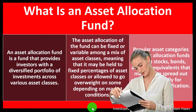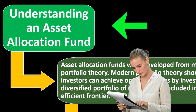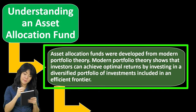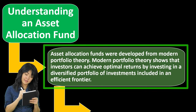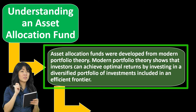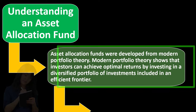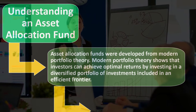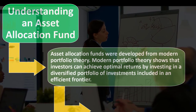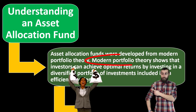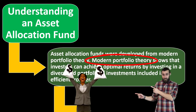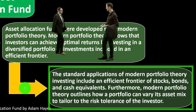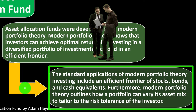Asset allocation funds were developed from modern portfolio theory. Modern portfolio theory shows that investors can achieve optimal returns by investing in a diversified portfolio of investments included in an efficient frontier. The idea is that with an optimal investment strategy, you could automatically invest in a diversified range of assets and get optimal returns — making it easy to put your money into a fund that does that. The standard application includes an efficient frontier of stocks, bonds, and cash equivalents.